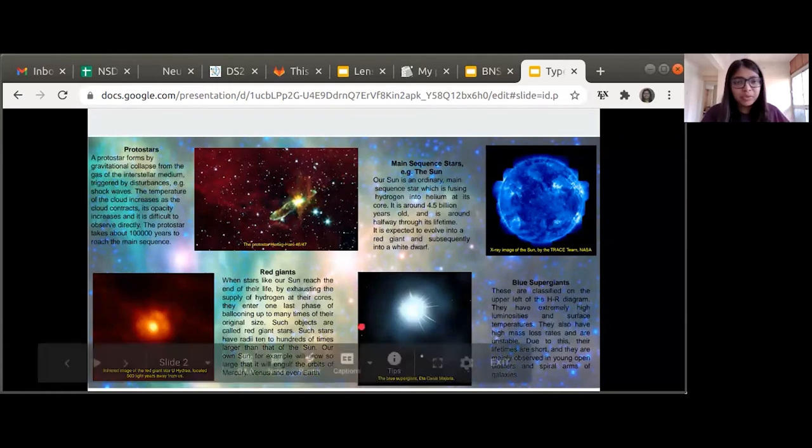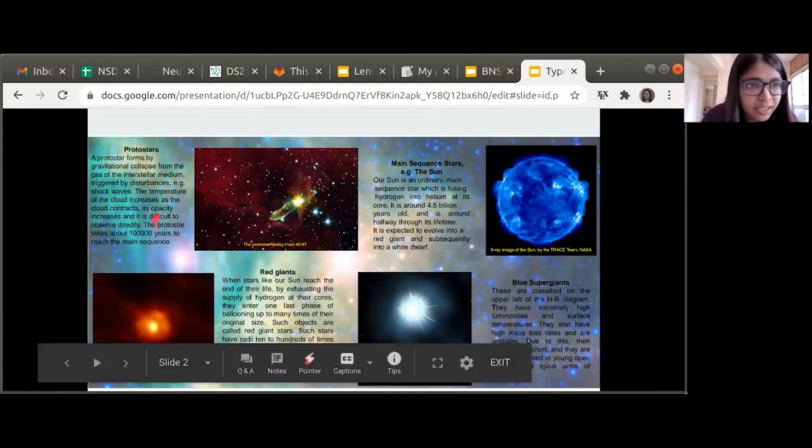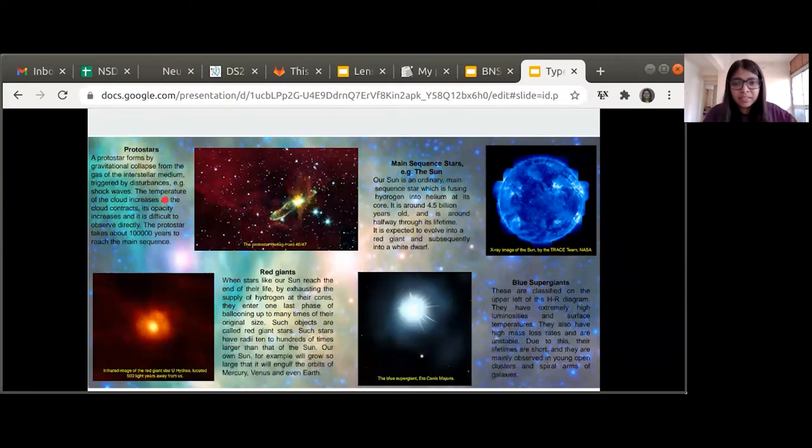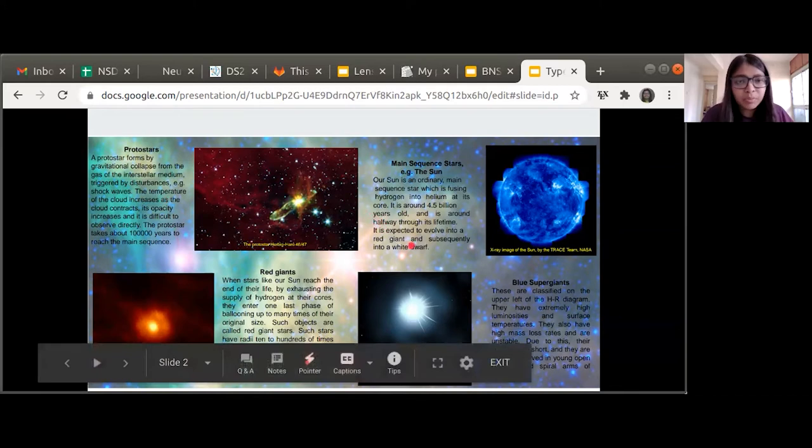First of all, the protostars. The protostars are the stars which are formed by the gravitational collapse of interstellar gas triggered by some disturbances like shock waves. These stars are hard to observe as they are very less dense and very less opaque. It takes about a hundred thousand years to become a main sequence star from the protostar stage.